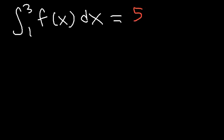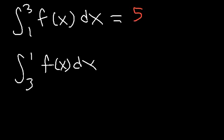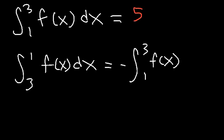Now what about this example? Let's say if the numbers were reversed — instead of 1 to 3, it's 3 to 1. This expression is equivalent to negative 1 times the integral from 1 to 3 of f of x dx. So therefore, the answer is negative 5.